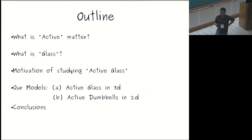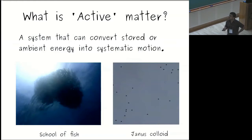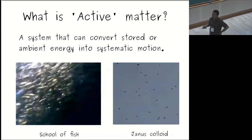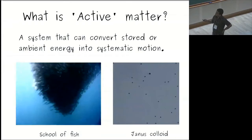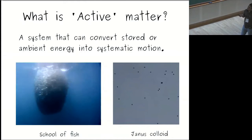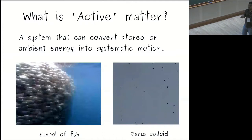All the definitions I will use are very naive. So what is active matter? For me, it's a system that can convert stored or ambient energy into systematic motion. One example is fish, which can use energy stored inside its body and shows systematic motion. Another example is Janus colloids, which are non-living but also show very interesting motion. These systems are out of equilibrium and self-propelled.